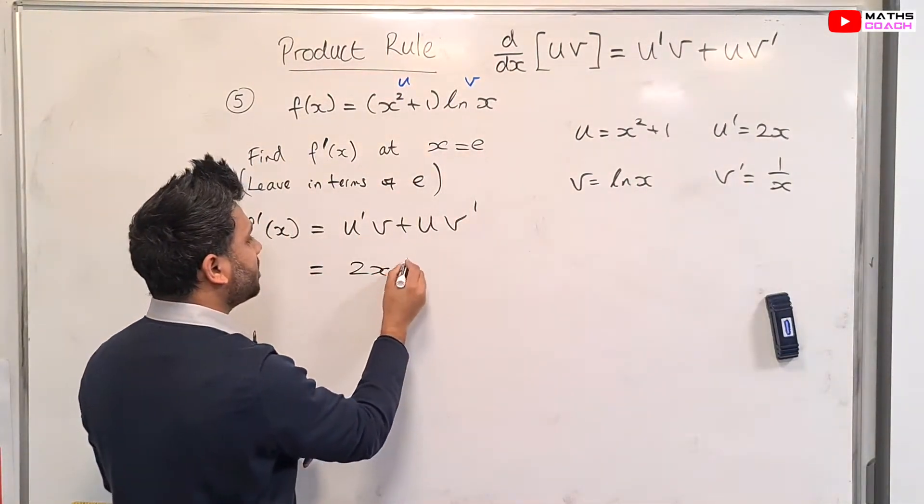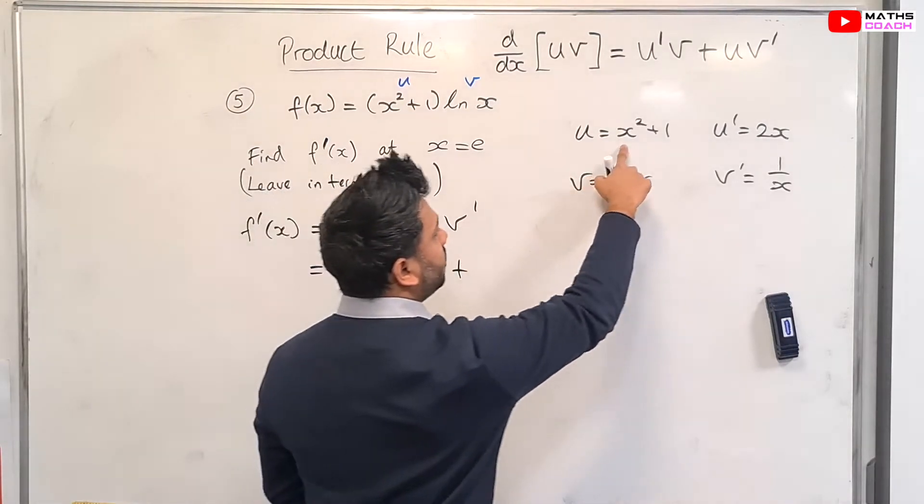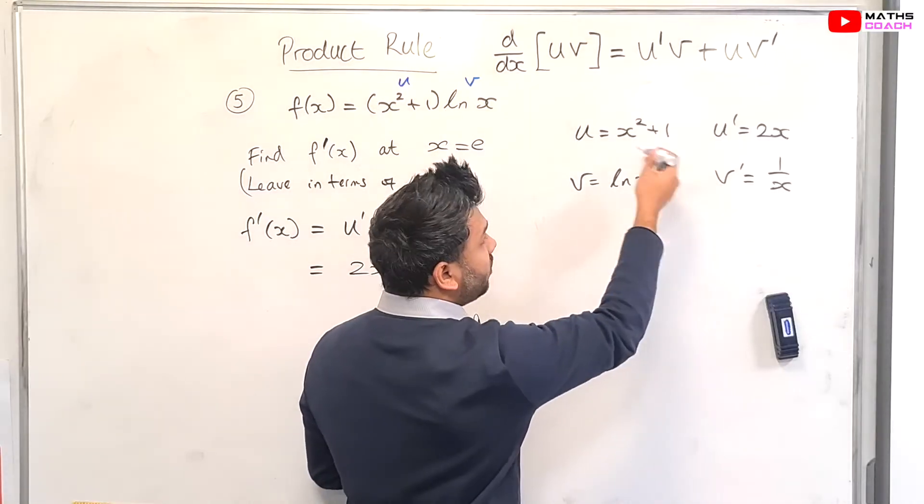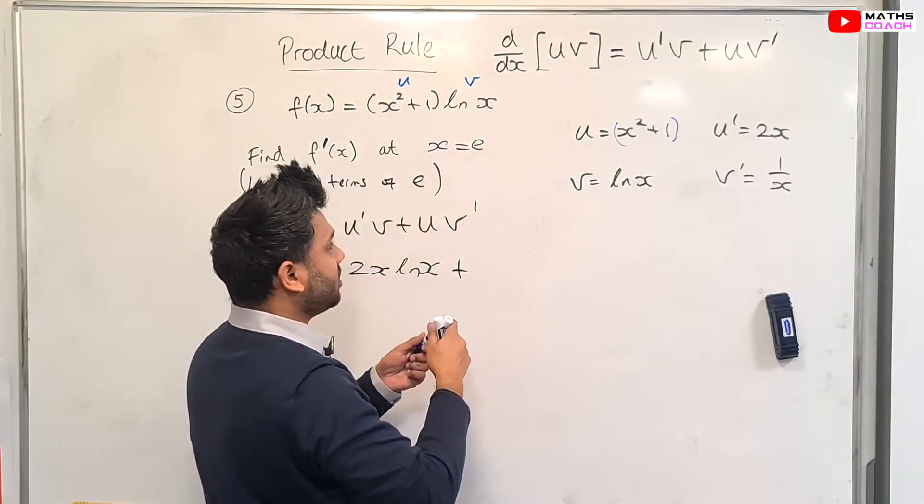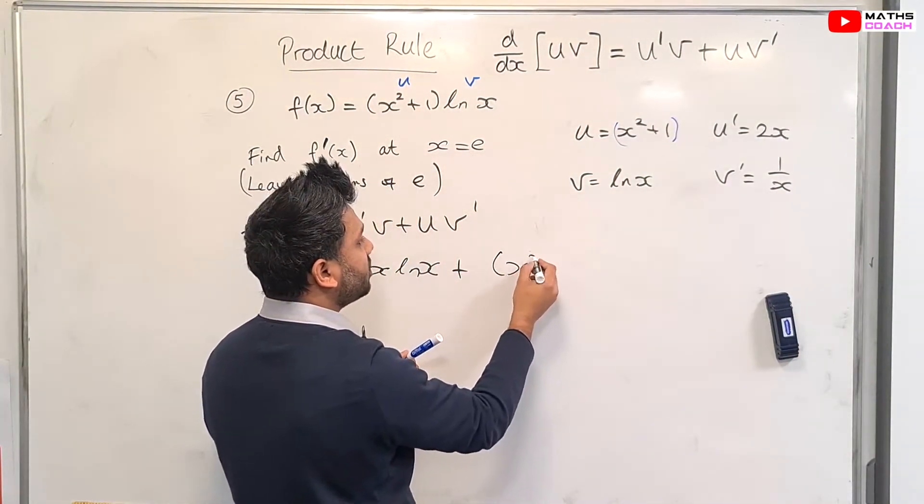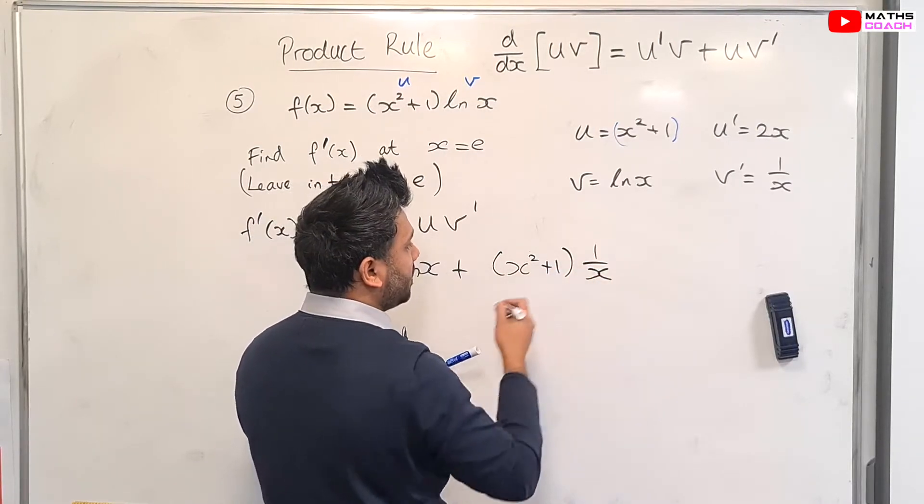So we have 2x ln x plus uv', so u times v'. When you're applying more than one term, always use brackets. So here I will have bracket x squared plus 1, all multiplied by 1 over x.